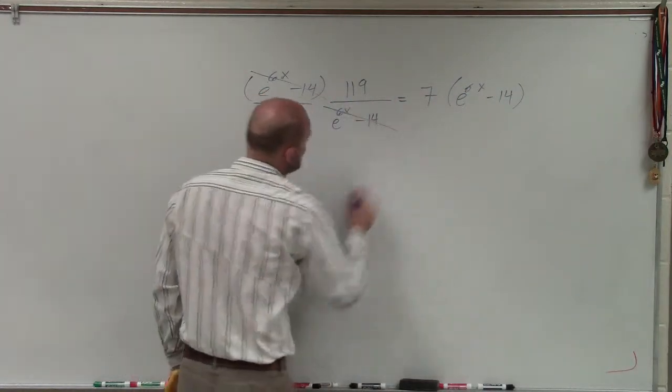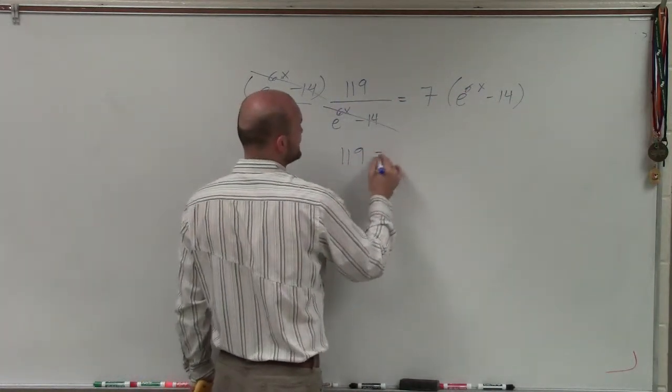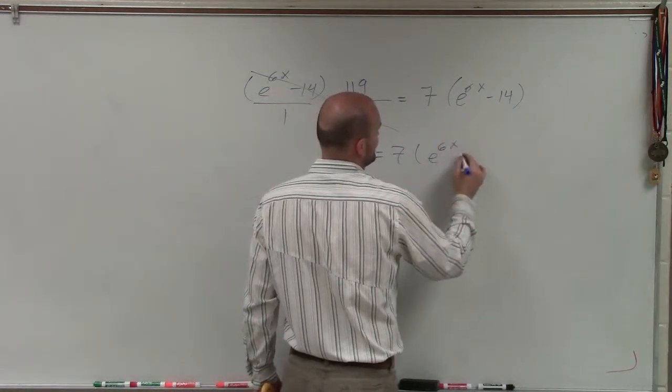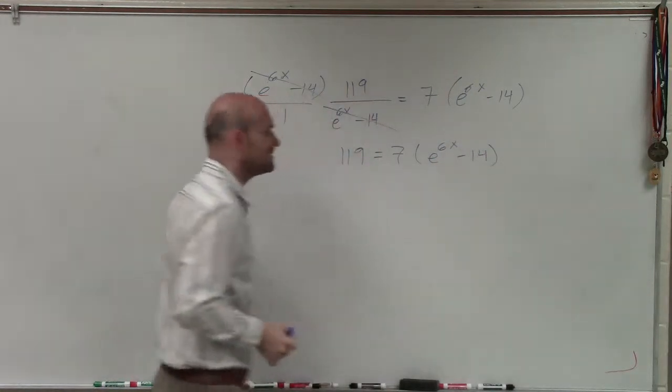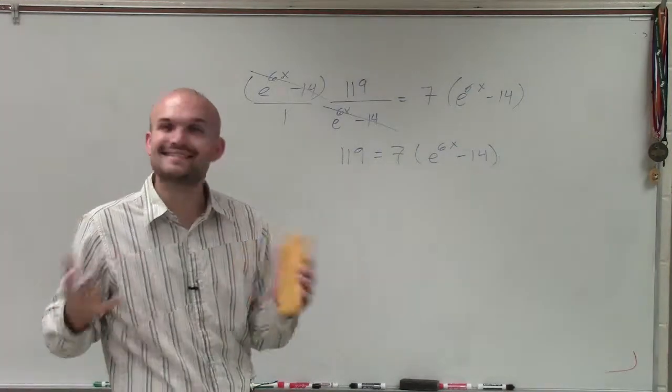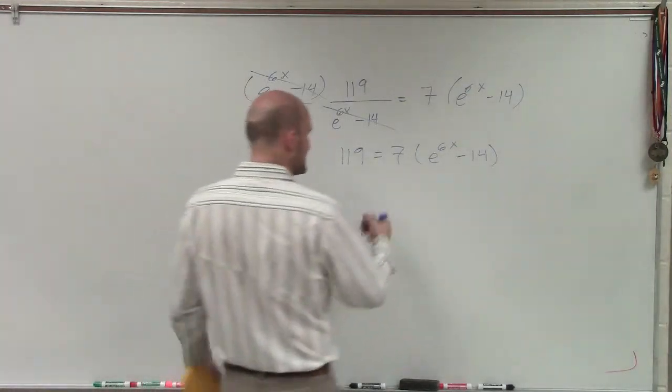Therefore, those now divide out to 1. So I'm left with 119 equals 7 times e to the 6x minus 14. And guess what, ladies and gentlemen, now I have an equation that does not have a fraction in it.